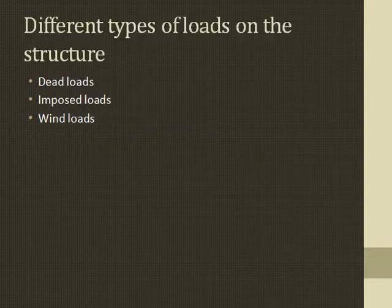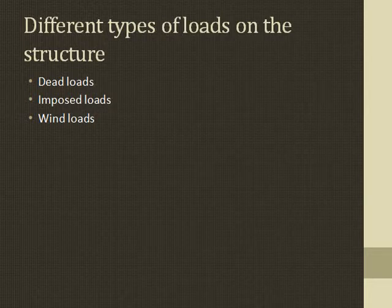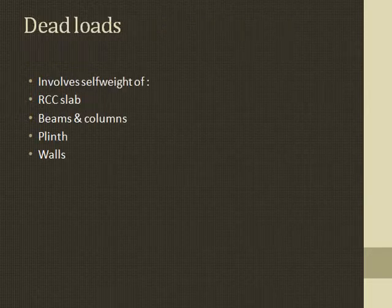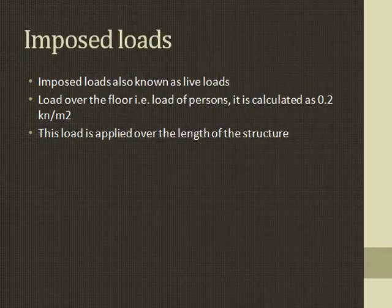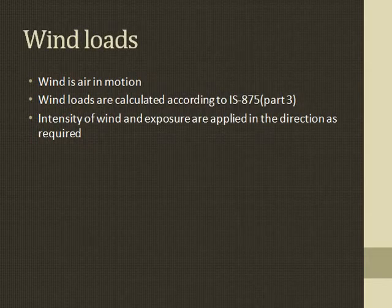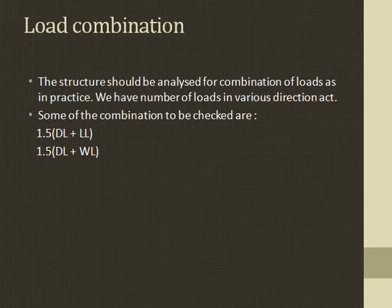Different types of loads on the structure include design loads, imposed loads, and wind loads. As it is a G plus 15 building, consideration of wind loads is extremely essential. Dead loads involve the self-weight of RCC slab, beams, columns, plinth, and walls. Imposed loads, also known as live loads, are calculated at 0.2 kN/m². Wind loads are calculated according to IS 875 Part 3. Load combinations include 1.5 times dead load plus live load, and 1.5 times dead load plus wind load.